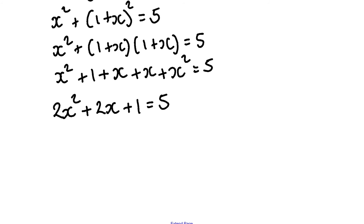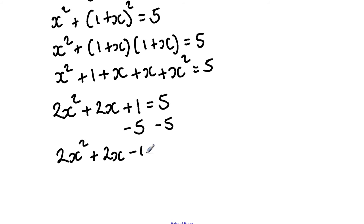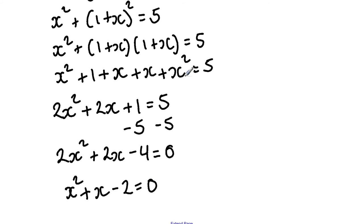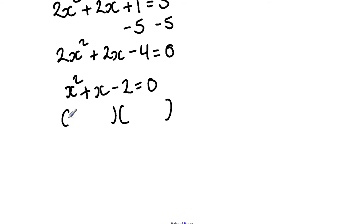Subtracting 5 from both sides: 2x squared plus 2x minus 4 equals 0. Dividing each term by 2: x squared plus x minus 2 equals 0. Factorizing: (x + 2)(x - 1) equals 0. Therefore the values of x are x equals -2 or x equals 1.